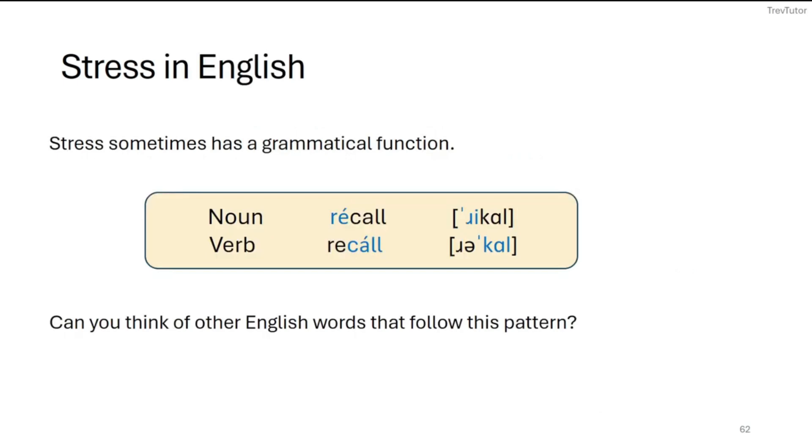So what stress can do in English sometimes, not always, this is not a hard and fast rule, but it can serve as a grammatical function. So we have some contrasts in words where we have a noun form and a verb form. In the noun form in two syllable words, we put stress on the first syllable. So if we were to do our little sigmas here, we put stress on the first. And in the verb form, we would put stress on the second. So announcing a recall versus recalling something. So you can hear a little bit of a difference there.